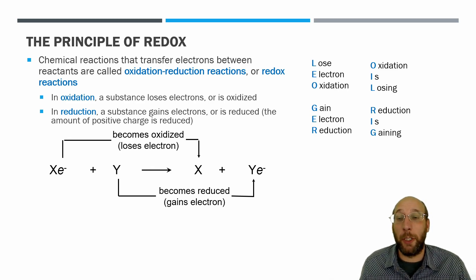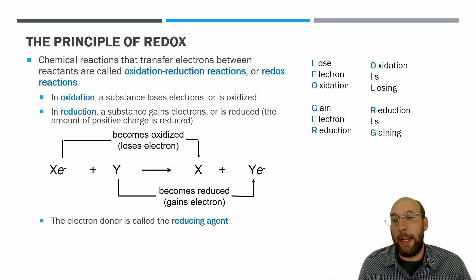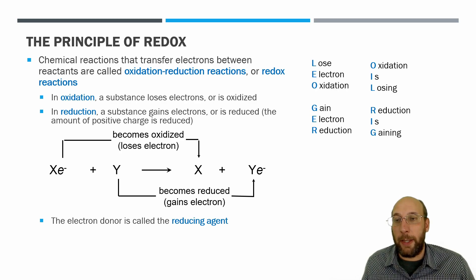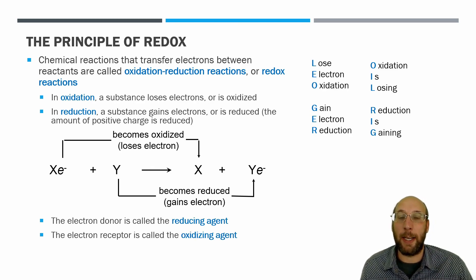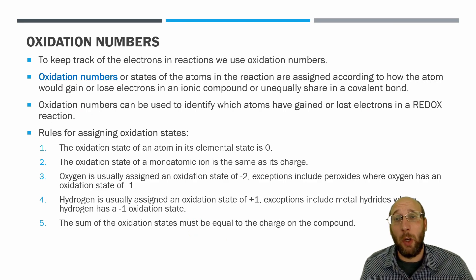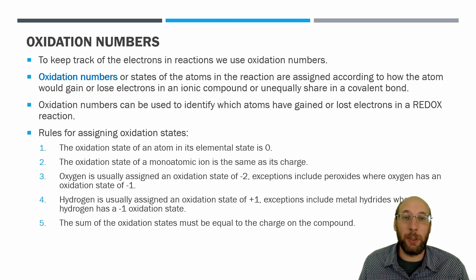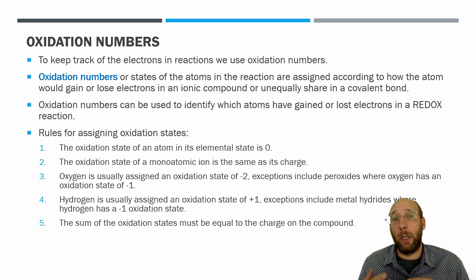You should also know that the electron donor in the oxidation-reduction reaction is called the reducing agent, and the electron acceptor is known as the oxidizing agent. So how do we figure out what is getting oxidized and what is getting reduced? There are three ways I'm going to talk about today.